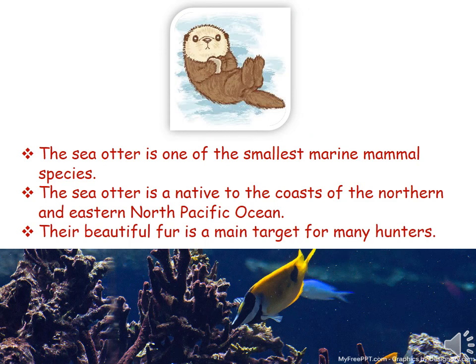The first animal is the sea otter. The sea otter is one of the smallest marine mammal species, and they are native to the coast of the northern and eastern North Pacific Ocean. They have beautiful fur, and that fur is the main target of many hunters — they hunt sea otters for their beautiful fur.